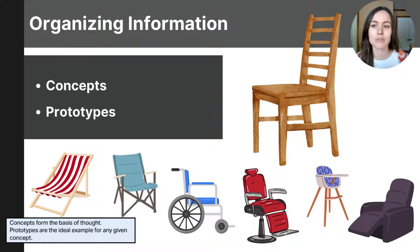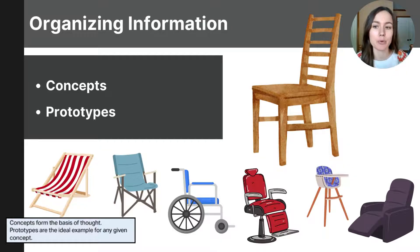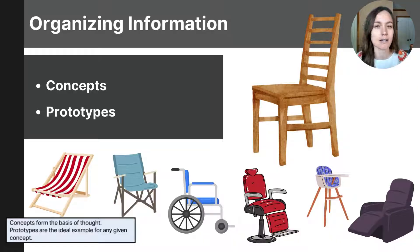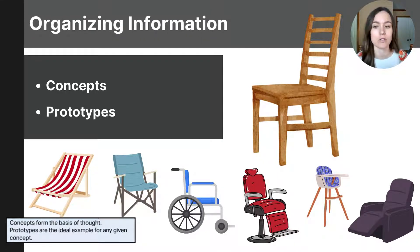Let's start with some basic terms related to how our minds categorize information. Concepts and prototypes play an important role in simplifying complex ideas and help us make sense of the world. Concepts are mental groupings of similar objects, events, ideas, or people that help us organize and understand the world. Concepts allow us to categorize things in our minds based on shared qualities or characteristics, making it easier for us to process and recall information.